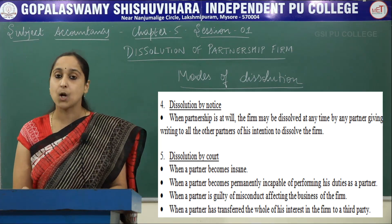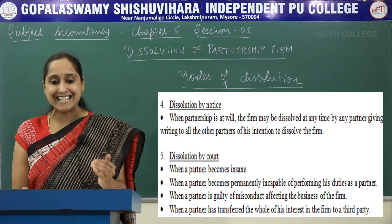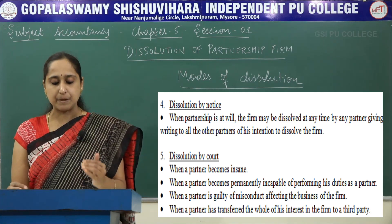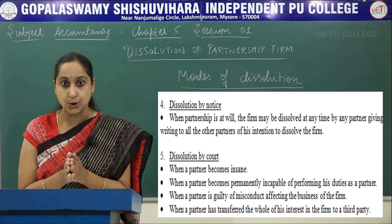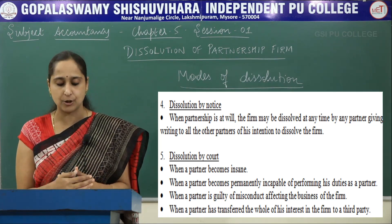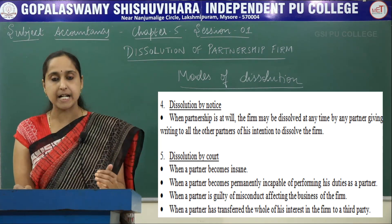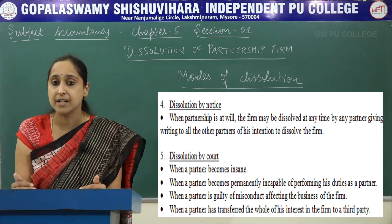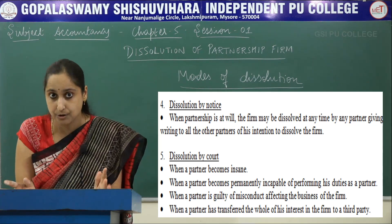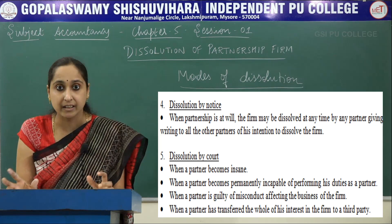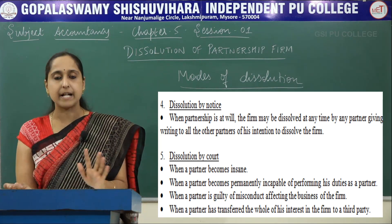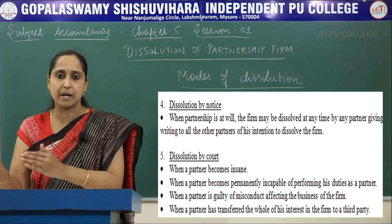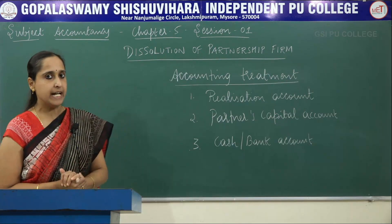Next is Dissolution by Court. First case: when a partner becomes insane — insane means mentally ill. Next, when a partner becomes permanently incapable of performing his duties. In those situations, the court comes into picture. When a partner is guilty of misconduct — misconduct means unacceptable behavior — affecting the business of the firm. And when a partner has transferred the whole of his interest in the firm to a third party.